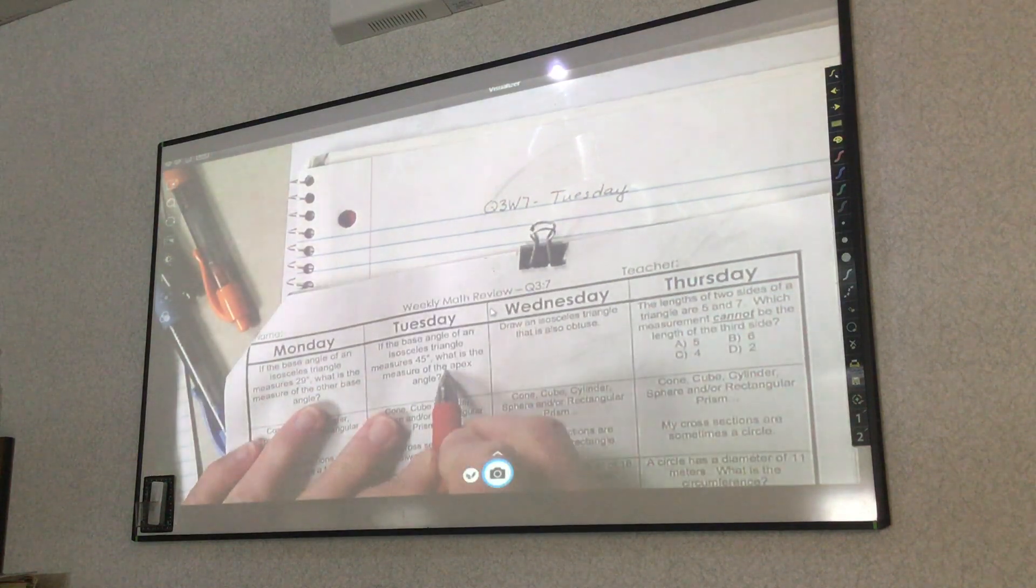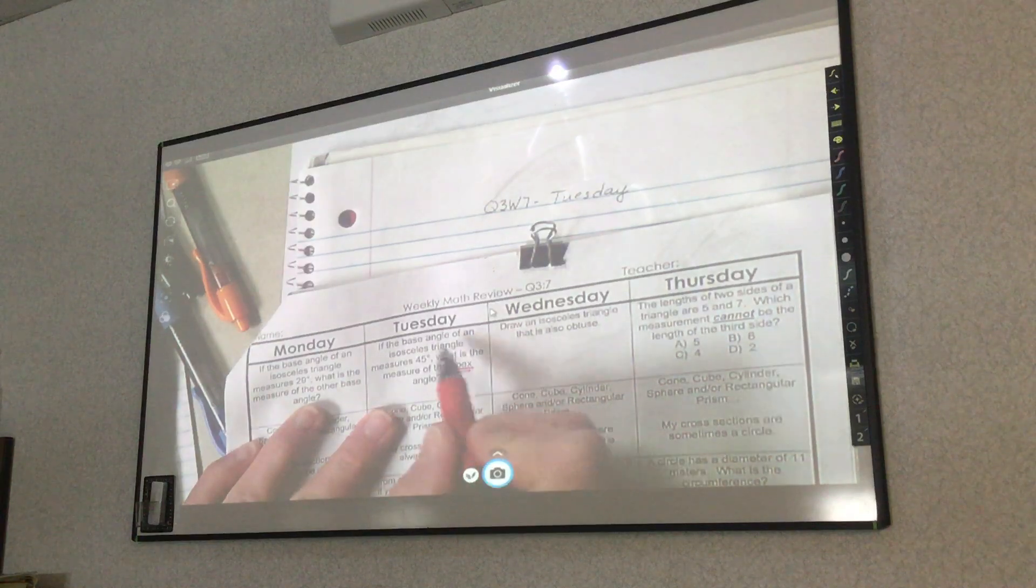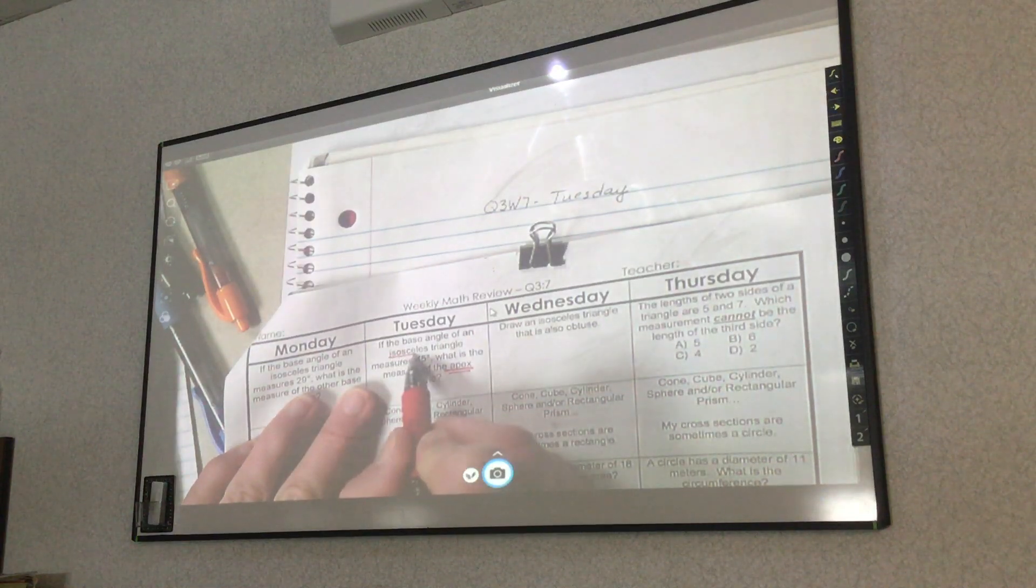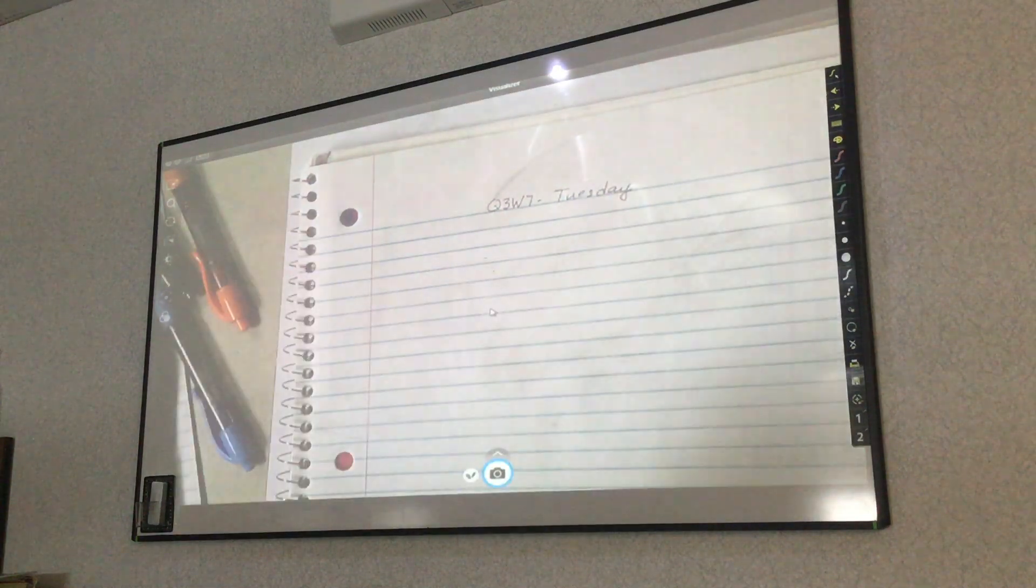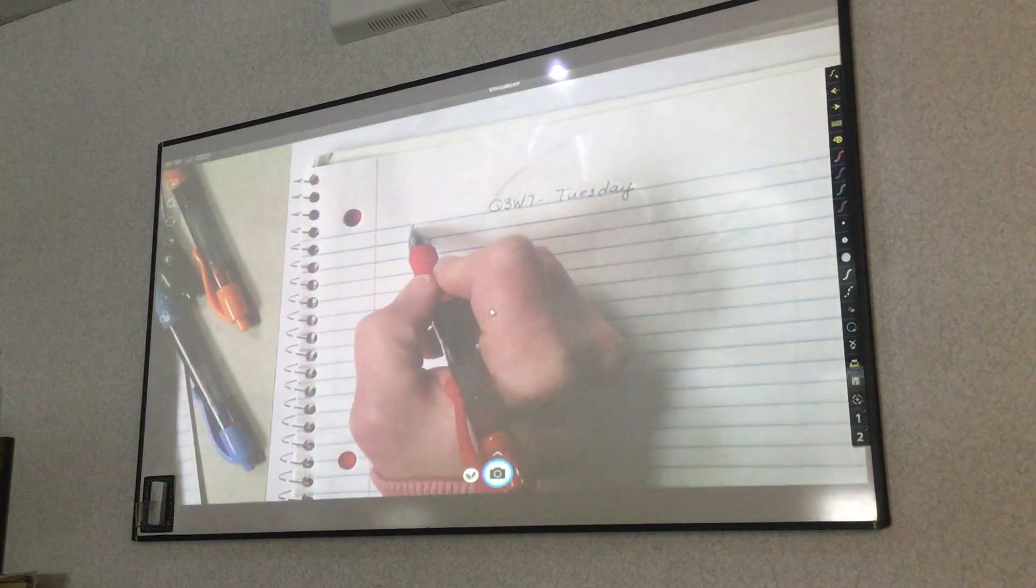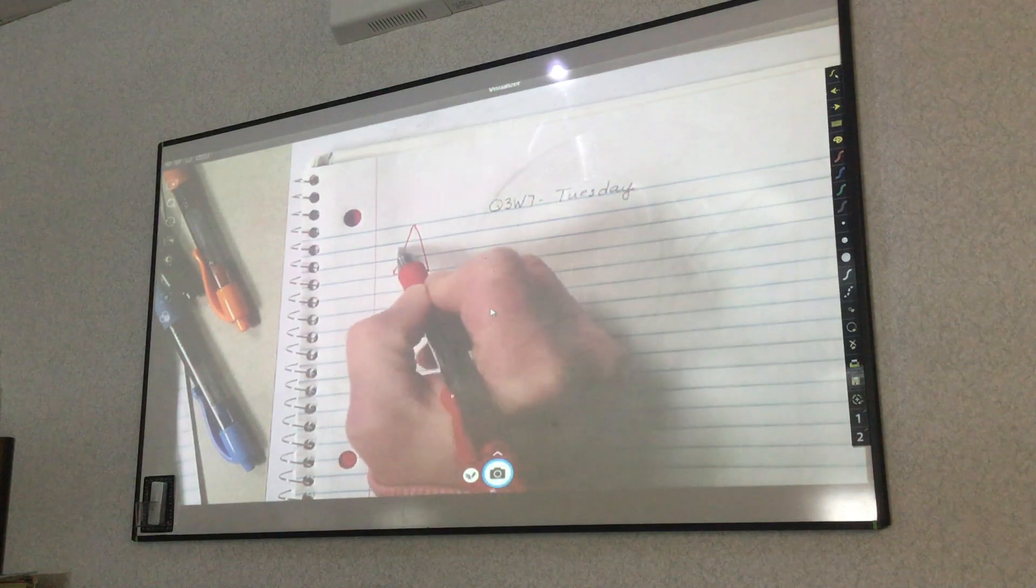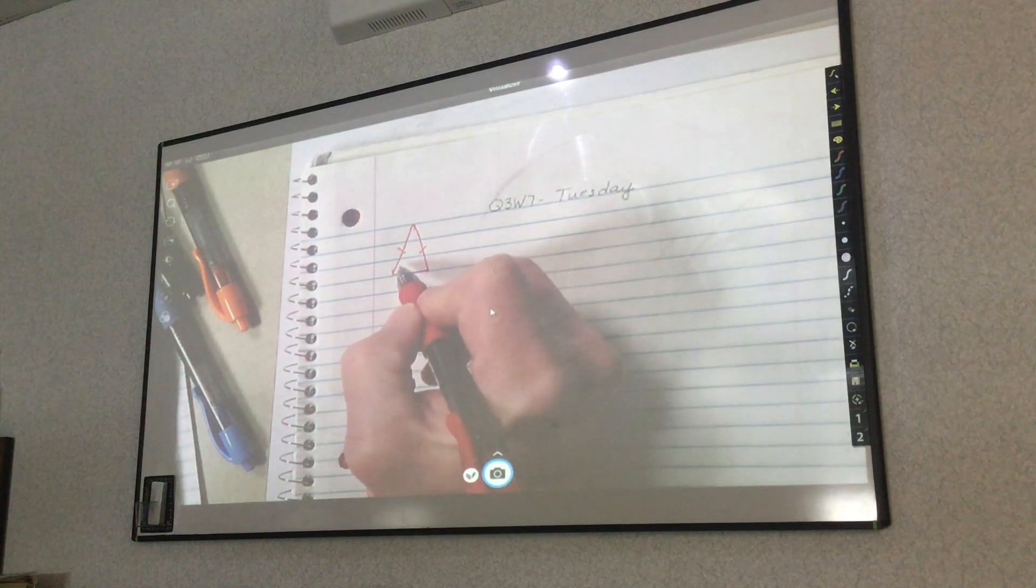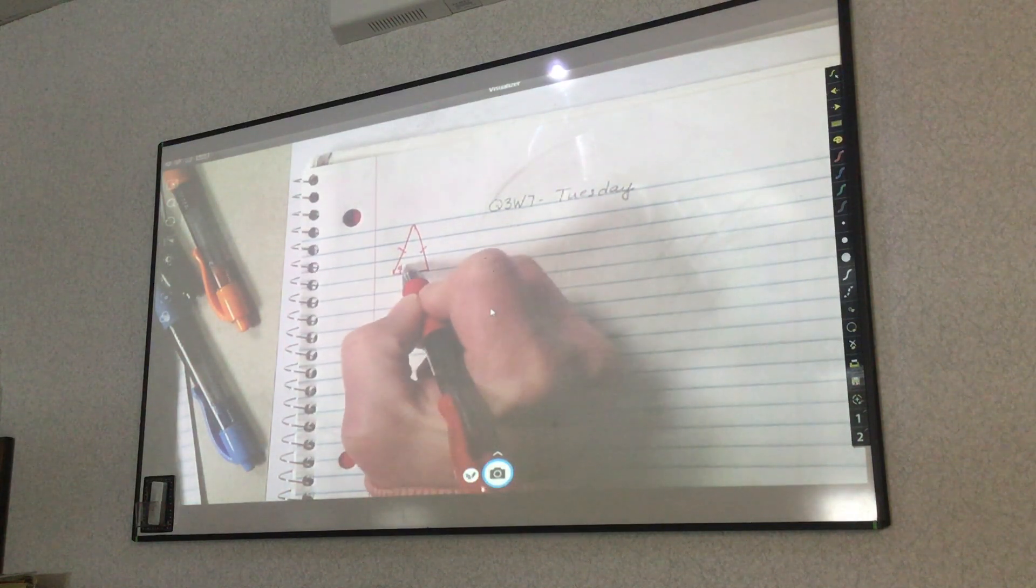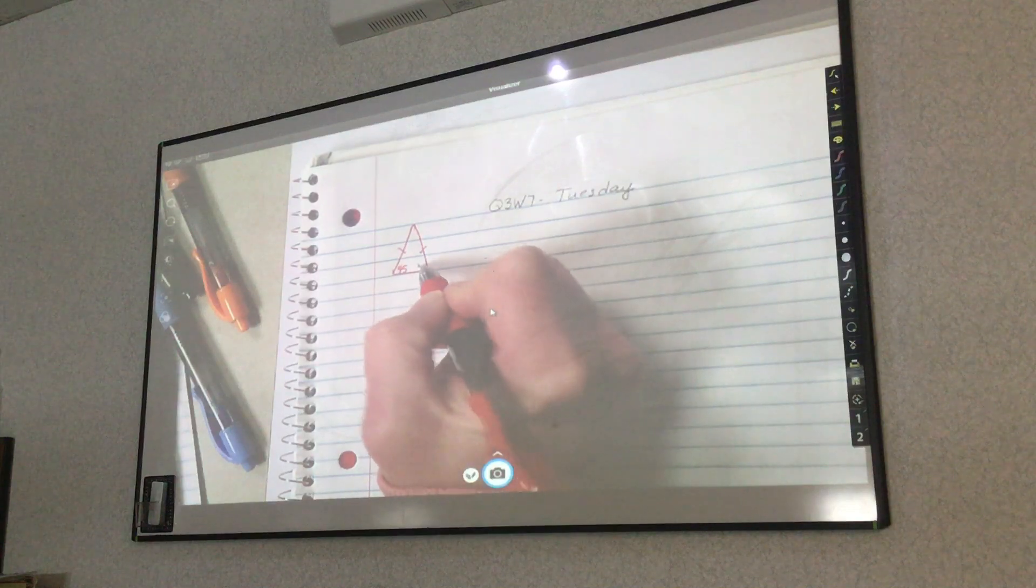So that is something new, so we need to know what the apex angle is. But we're dealing again with that isosceles triangle and the base angles. So if I draw my isosceles triangle, we know that these two sides are the same. The base angle is 45, and like we said yesterday, if one's 45, the other one's 45.